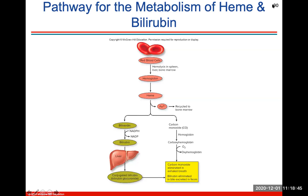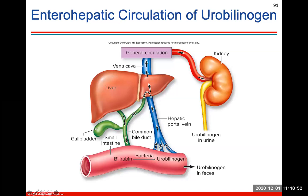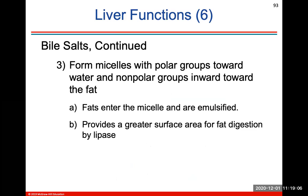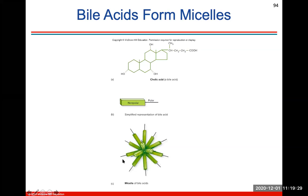Here's a look at the pathway of the metabolism of heme and bilirubin. You don't need to know the enterocirculation of urobilinogen in detail. Bile salts are made from bile acids, which are derived from cholesterol. Bile salts are important for forming micelles — a surrounding structure around a fat molecule. Fat will enter this micelle structure and will be emulsified or broken down, providing a greater surface area for fat digestion by the enzyme lipase.